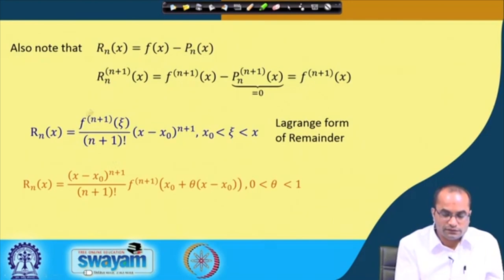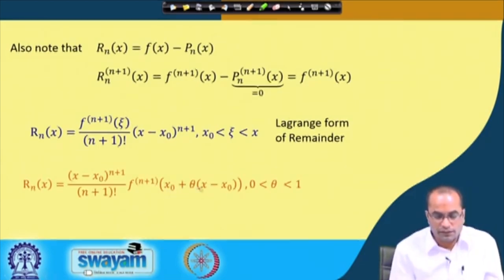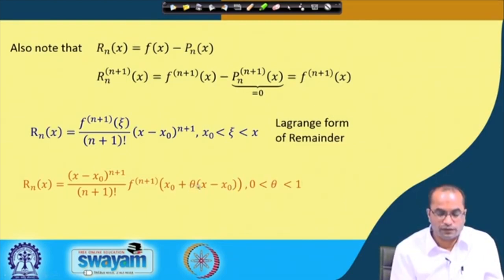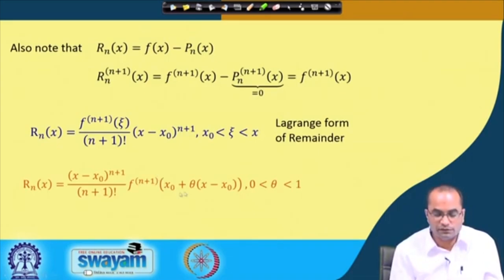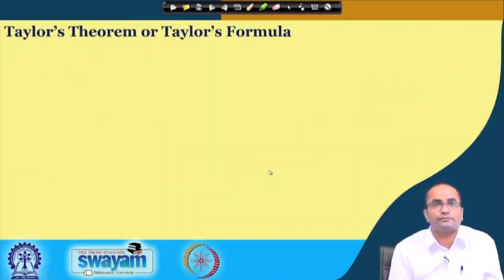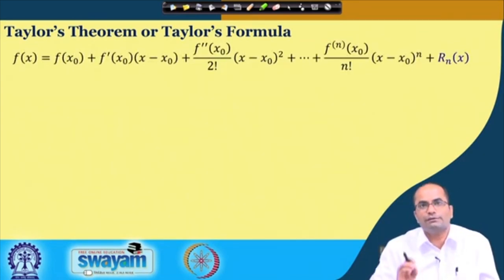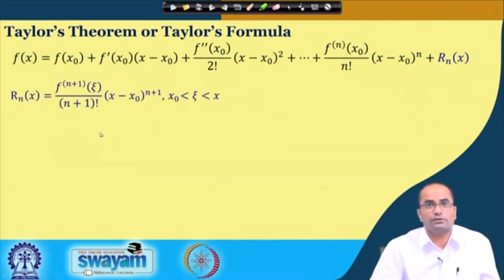Taylor's theorem summarized: a function f(x) can be expanded as f(x) = f(x₀) + f′(x₀)(x−x₀) + ⋯ + f⁽ⁿ⁾(x₀)/n! · (x−x₀)ⁿ + R_n(x), where R_n(x) = f^(n+1)(ξ)/(n+1)! · (x−x₀)^(n+1) is the Lagrange form of the remainder. In the special case n = 0, this remainder becomes f′(ξ)(x − x₀), which recovers the Lagrange mean value theorem — a special case of Taylor's theorem.